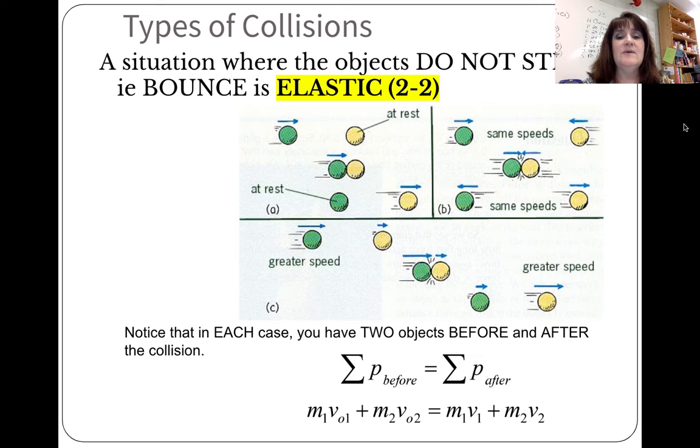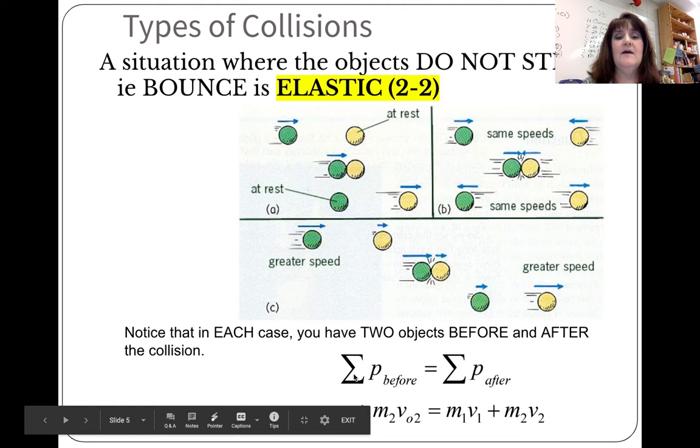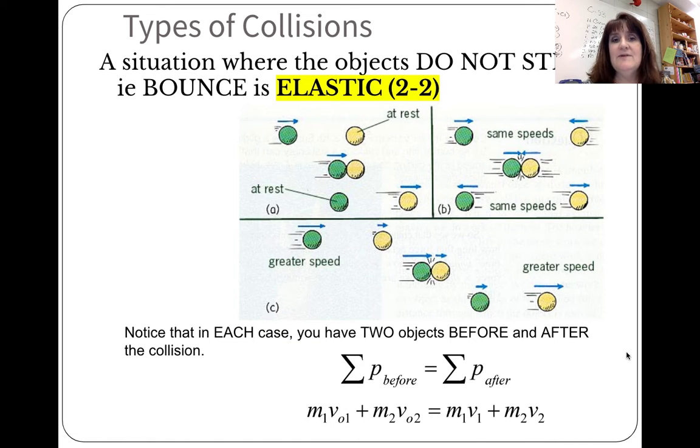So notice down here that you have this equation. The momentum before is equal to the momentum after. And then you have that wonderful equation at the bottom. M1 V naught 1 plus M2 V naught 2 is equal to M1 V1 plus M2 V2. Meaning the masses don't change before and after. You always have two objects before and two objects after that you're trying to find the momentum. Remember that direction has to be taken into account.